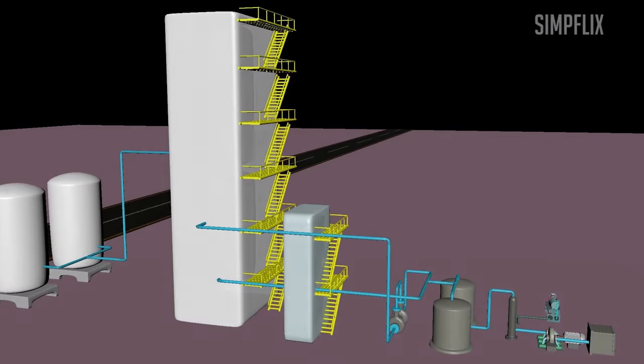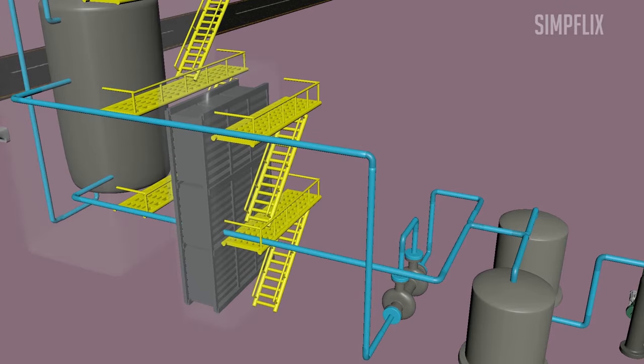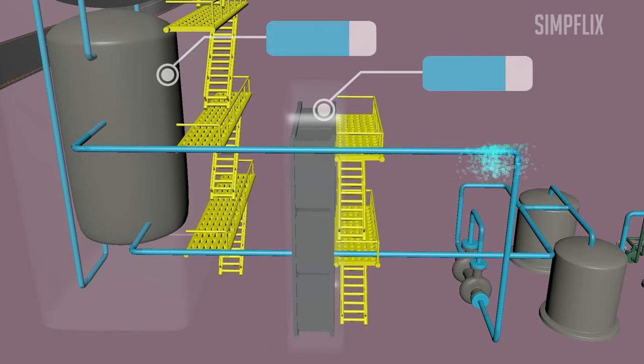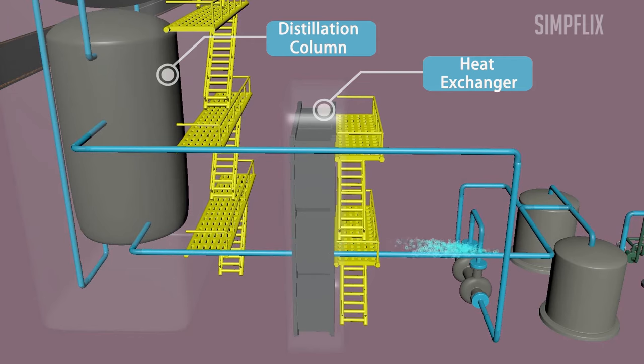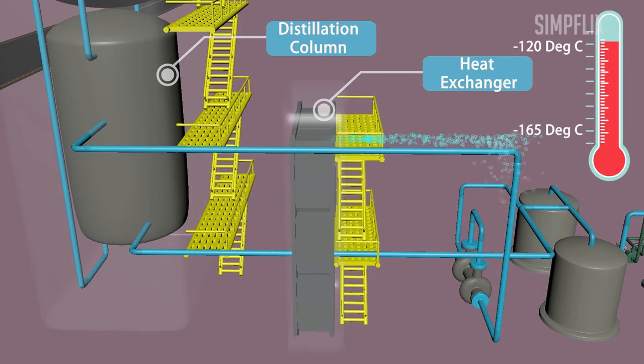Then this expanded air is passed to fractional distillation column through heat exchangers. Repeated circulation of this cold air through expansion turbine, heat exchanger, and fractional distillation column, air temperature is further reduced to minus 165 degrees Celsius.